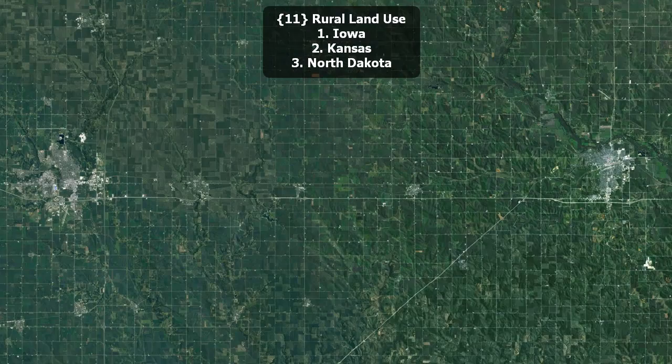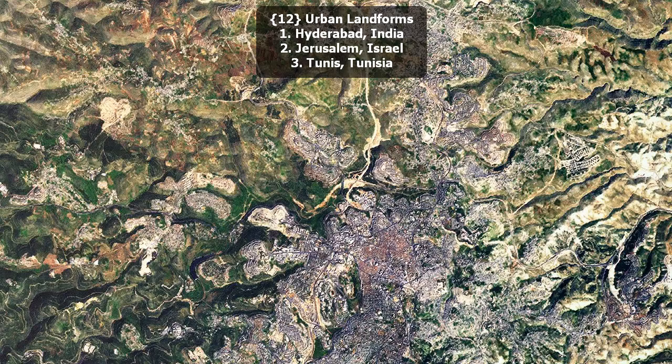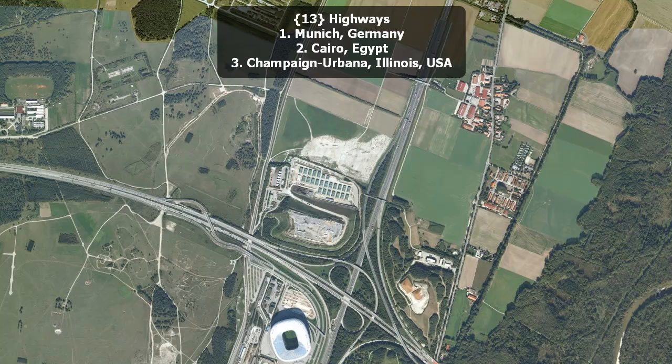Rural land use. Is this Iowa, Kansas, or North Dakota? Urban landforms. Hyderabad, India; Jerusalem, Israel; or Tunis, Tunisia? Highways. Infrastructure. Stadiums.